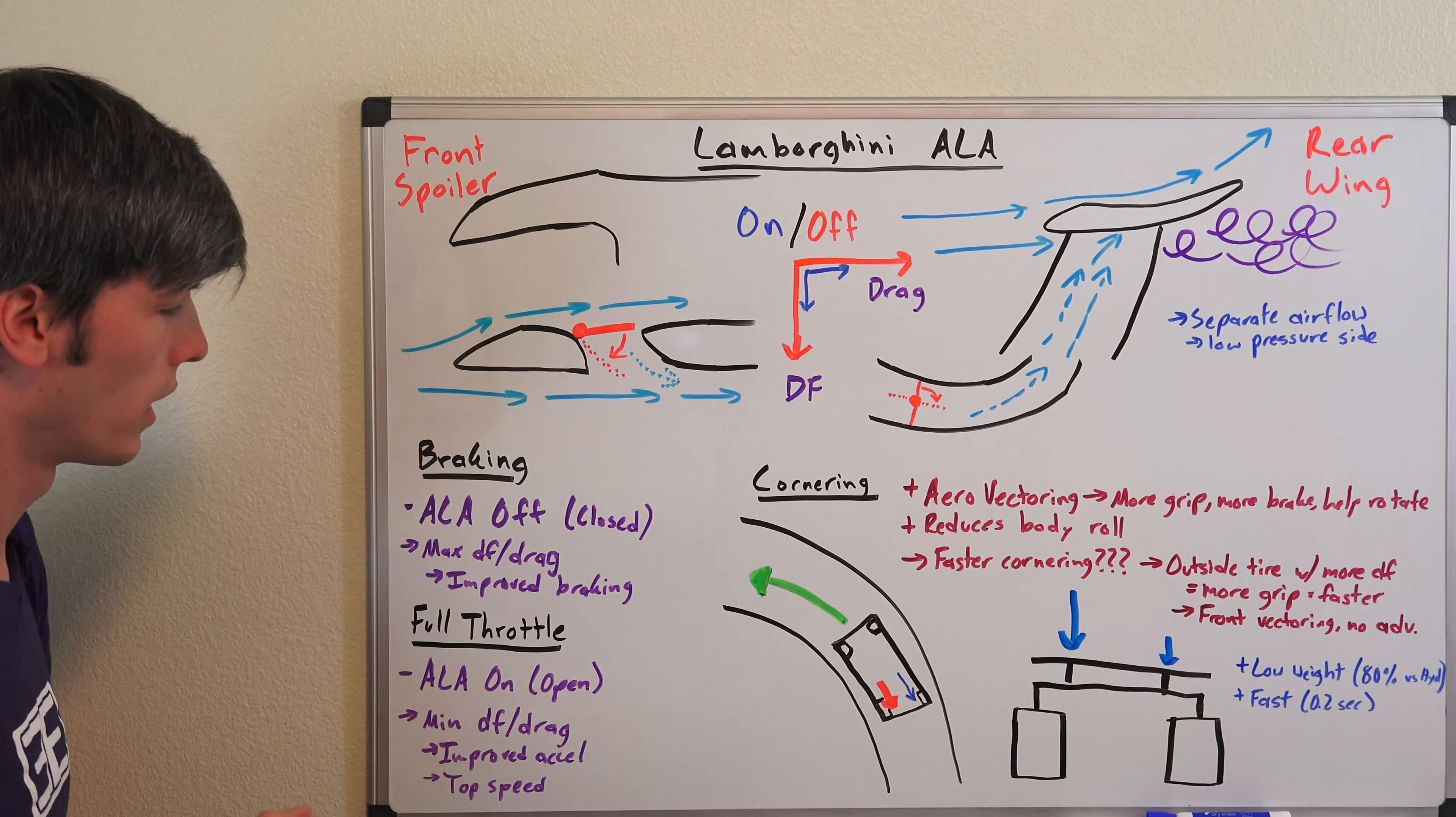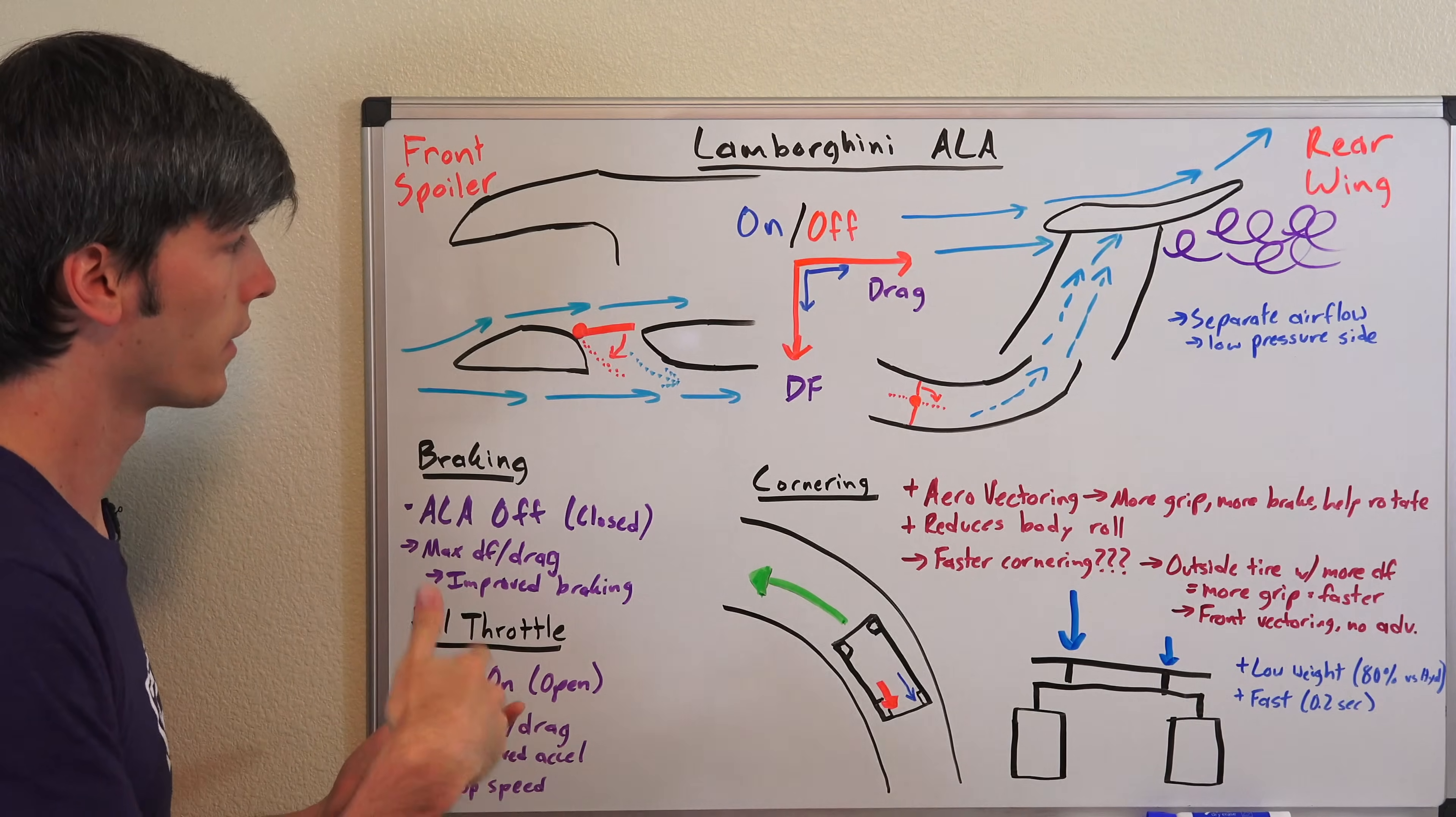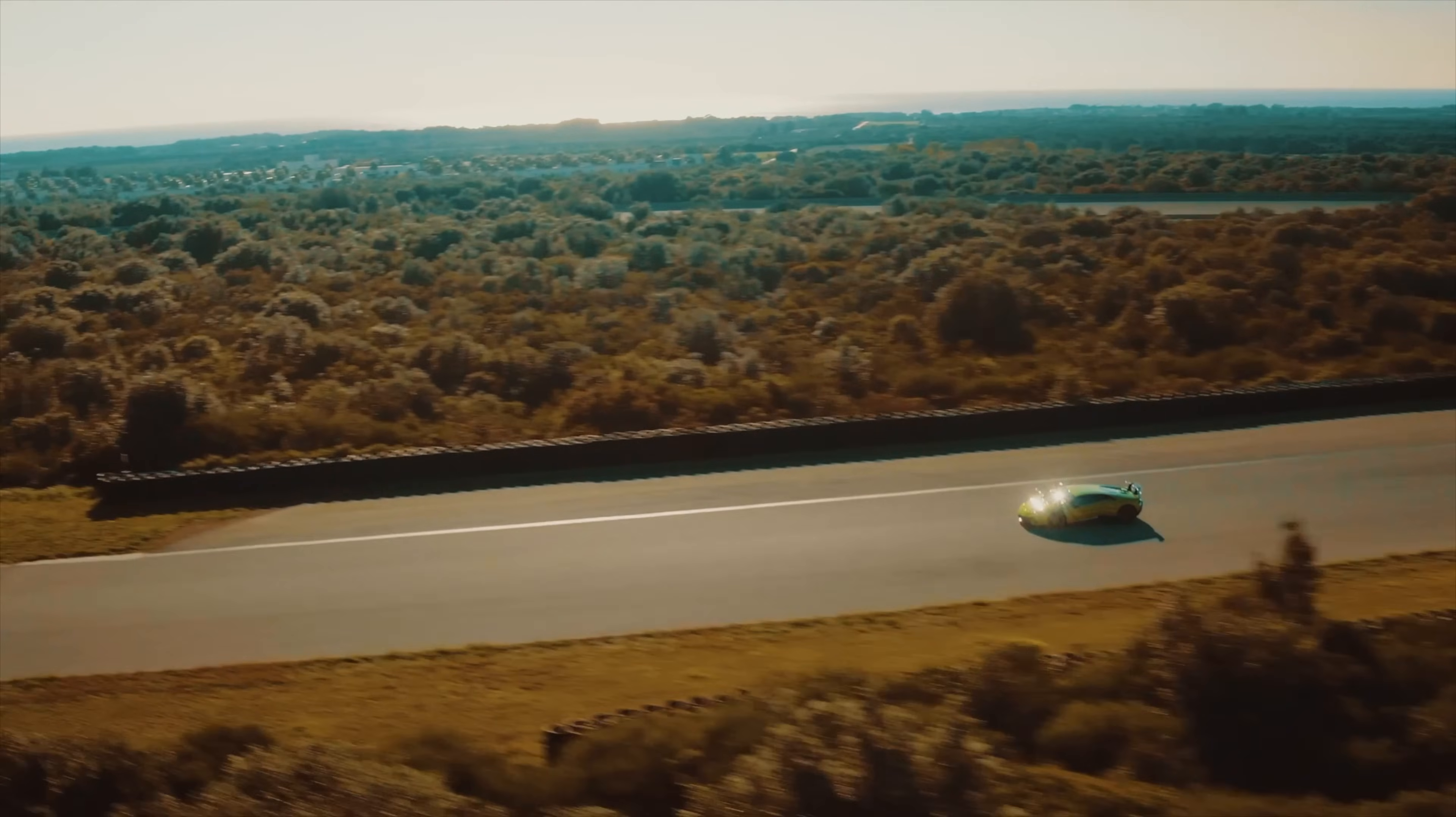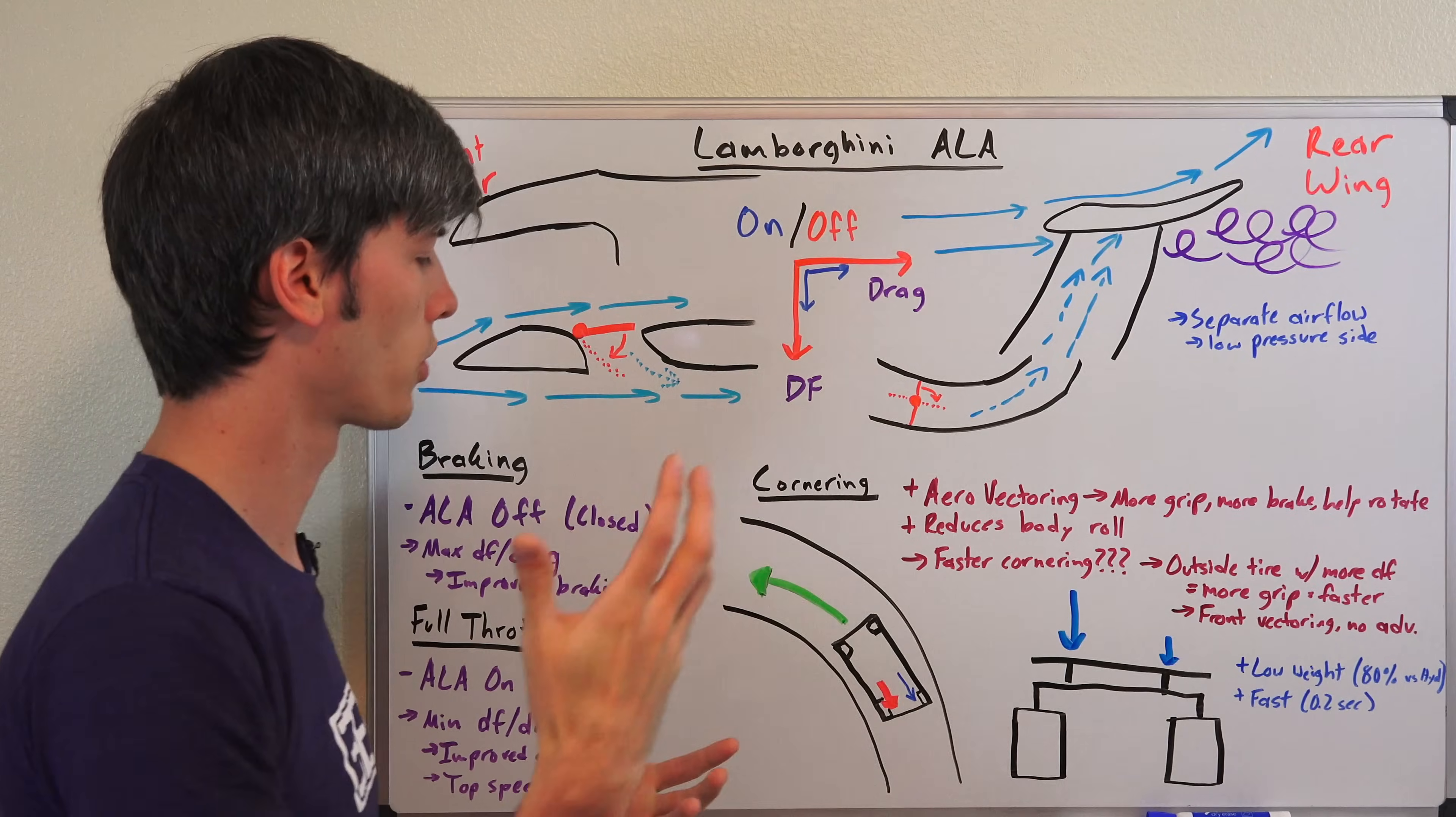With full throttle, if you're going straight ahead you just want to be able to accelerate as fast as possible. So you're going to turn the ALA system on, it's going to open up both of these. You're going to allow that air to channel through up the front and allow the air to channel here. So you create that turbulence at the wing and you don't have as much drag or downforce. So the car is going to be more slippery, able to accelerate quicker and able to reach higher speeds.